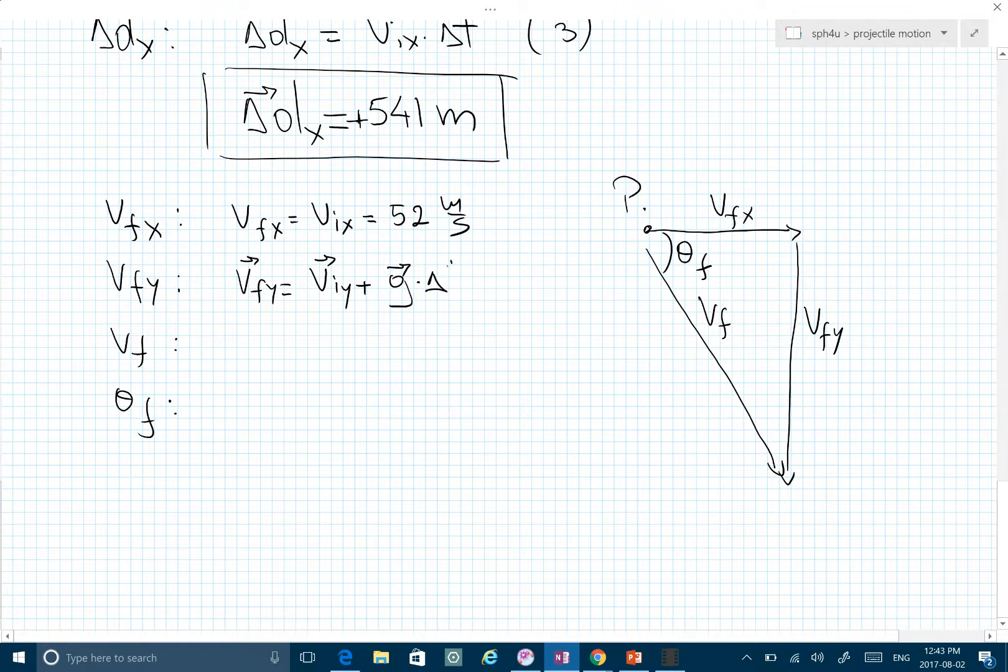...acceleration times time. We have the time, the acceleration, and VIY, so we find VFY to be negative 63.1 meters per second. Now let's find VF.